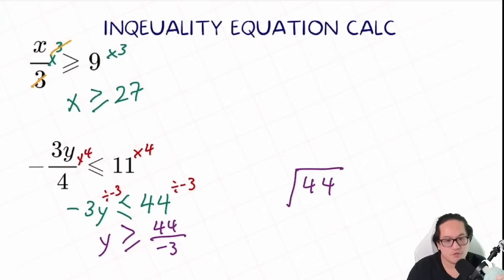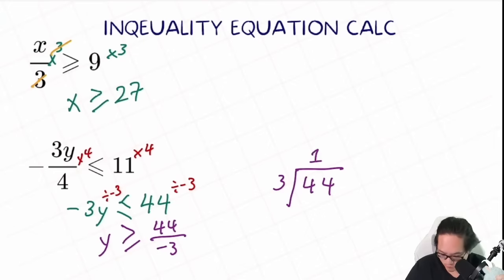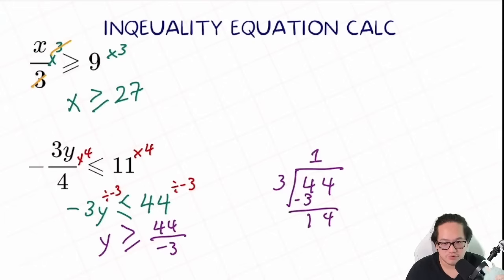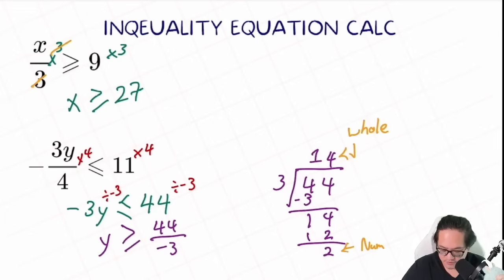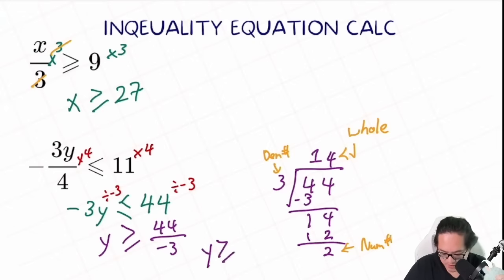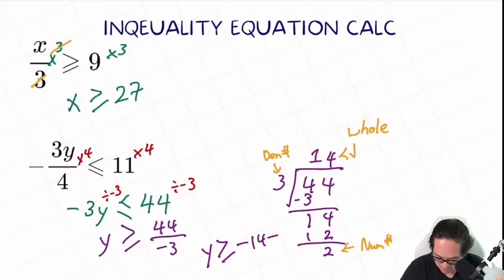On the other side, it will be 44 divided by negative 3. That's not the final answer — we know this is an improper fraction. We need it as a mixed fraction in its simplest form. We put 44 inside and 3 on the outside. 3 goes into 44 fourteen times with a remainder of 2. So the whole number is 14, numerator is 2, denominator is 3. So y is larger or equal to negative 14 and 2 over 3. And that will be your final answer.